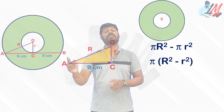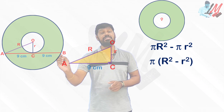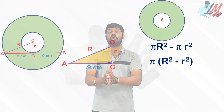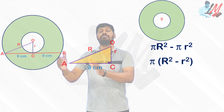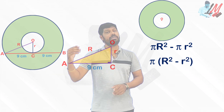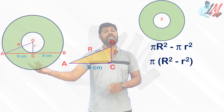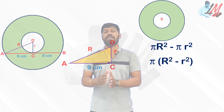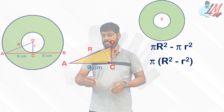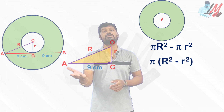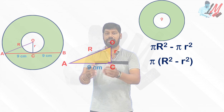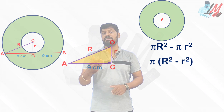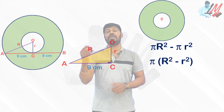The total length of AB is 18, and C is the midpoint of line segment AB — since OC is perpendicular to the chord, it bisects it. So BC and AC are each 9 centimeters, meaning this side of the right triangle is 9 centimeters.